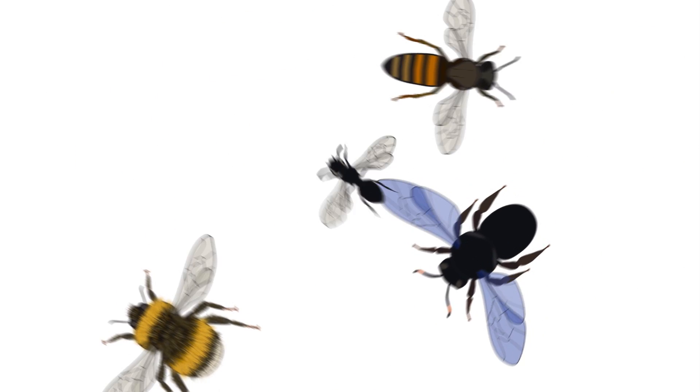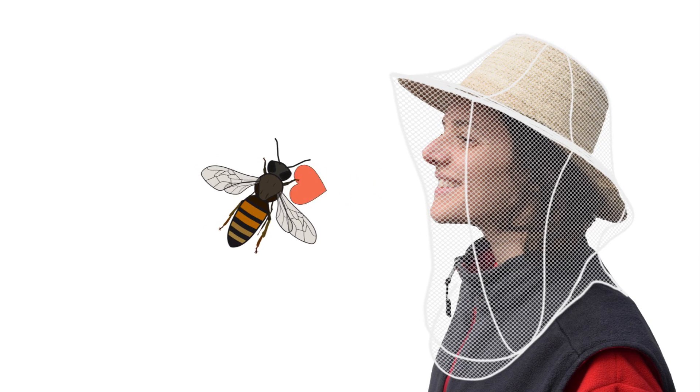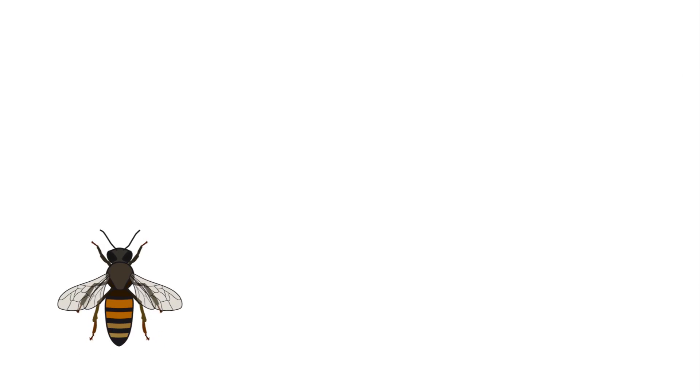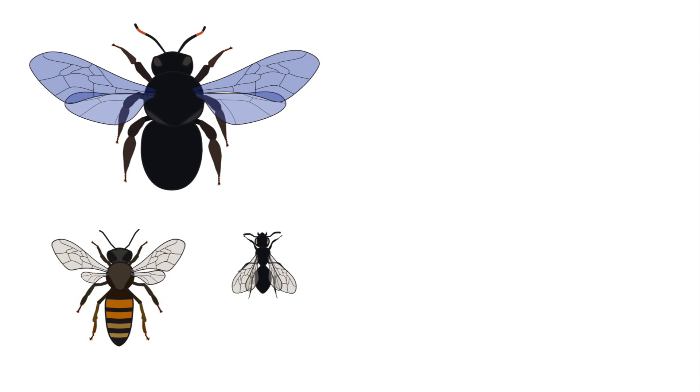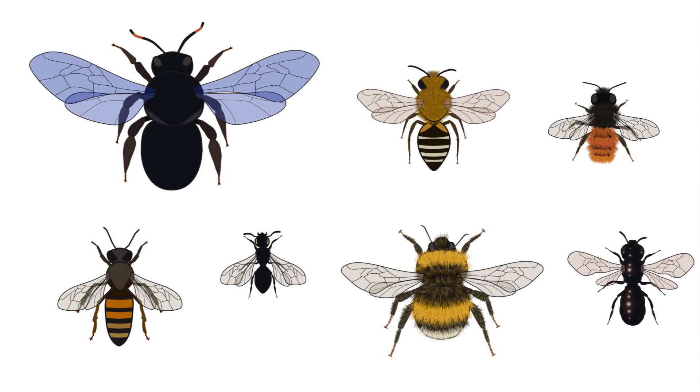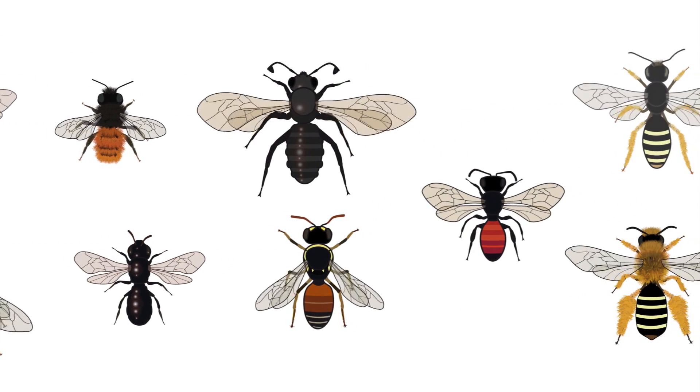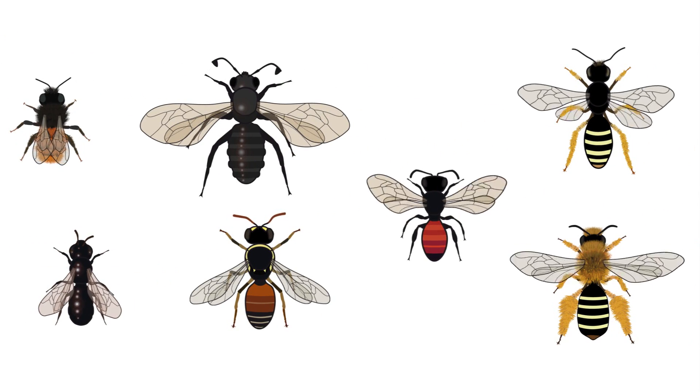The honeybee is only one of the many bee species, and it is quite special because it is managed by beekeepers. But there are many more wild bees. Some are big, others small, hairy, or shiny. Some have long antennae, others short antennae. Some have a red bee hind, some have a yellow bee hind.